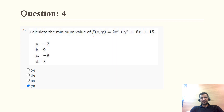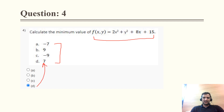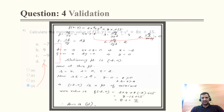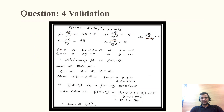Question 4: Calculate the minimum value of this function. The correct answer is D, which is 7. With the help of Professor Dr. Anita Malik, I solved and validated this question. The correct option is D and the answer is 7.